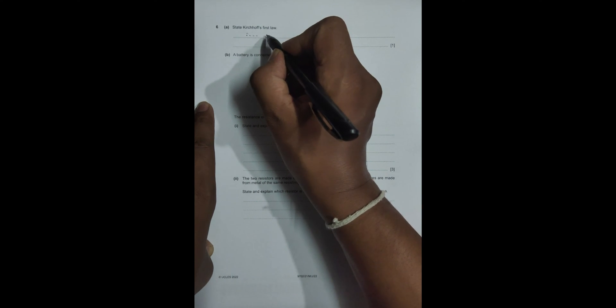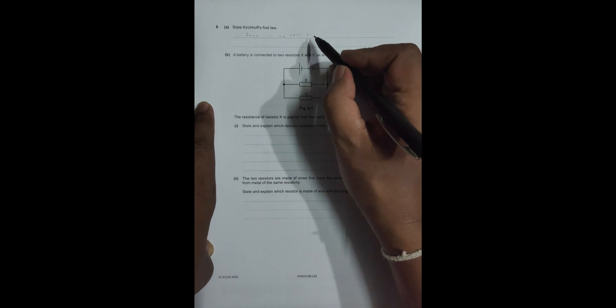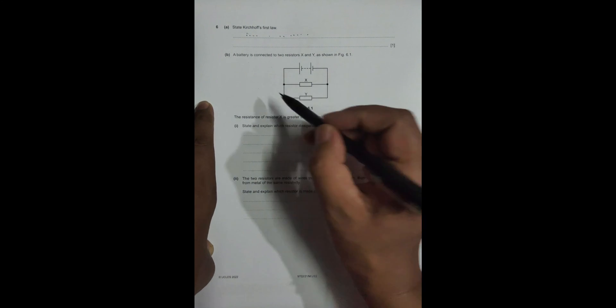...the current law. It says the sum of the current going into the junction and coming out of the junction should be equal to each other. Or we can say at any node or junction of a circuit, the incoming current is equal to outgoing current.